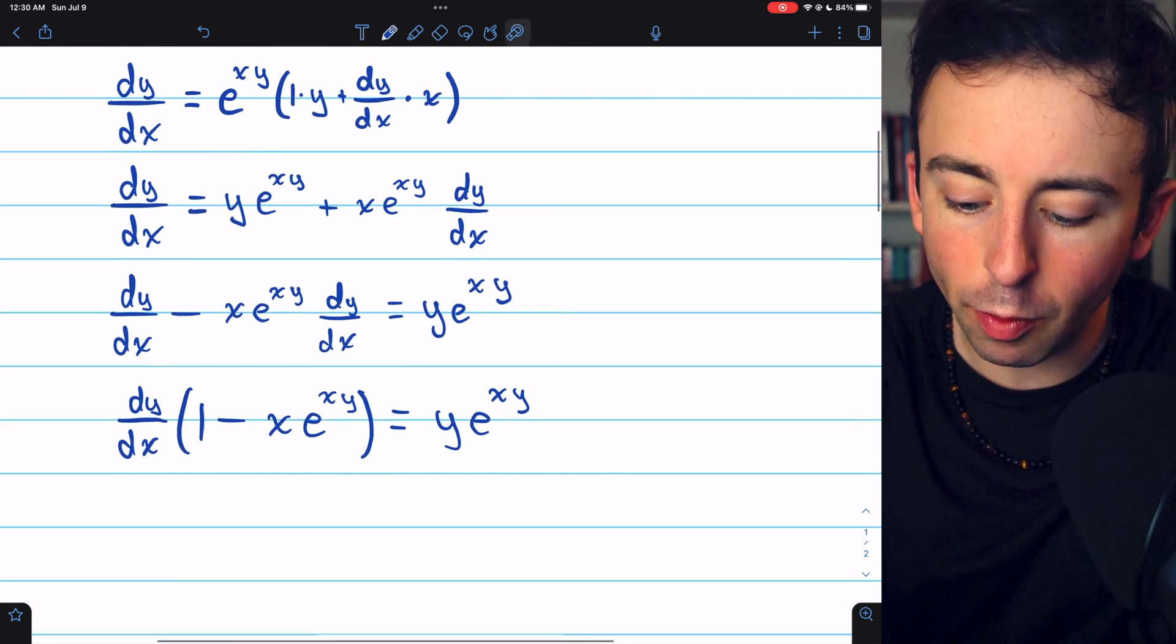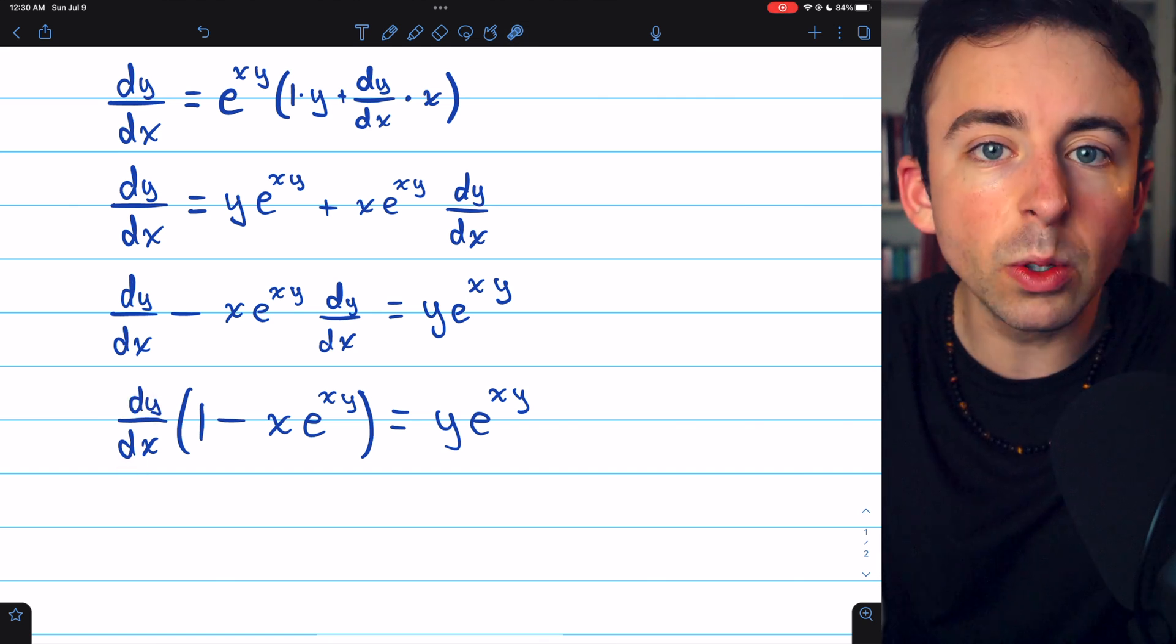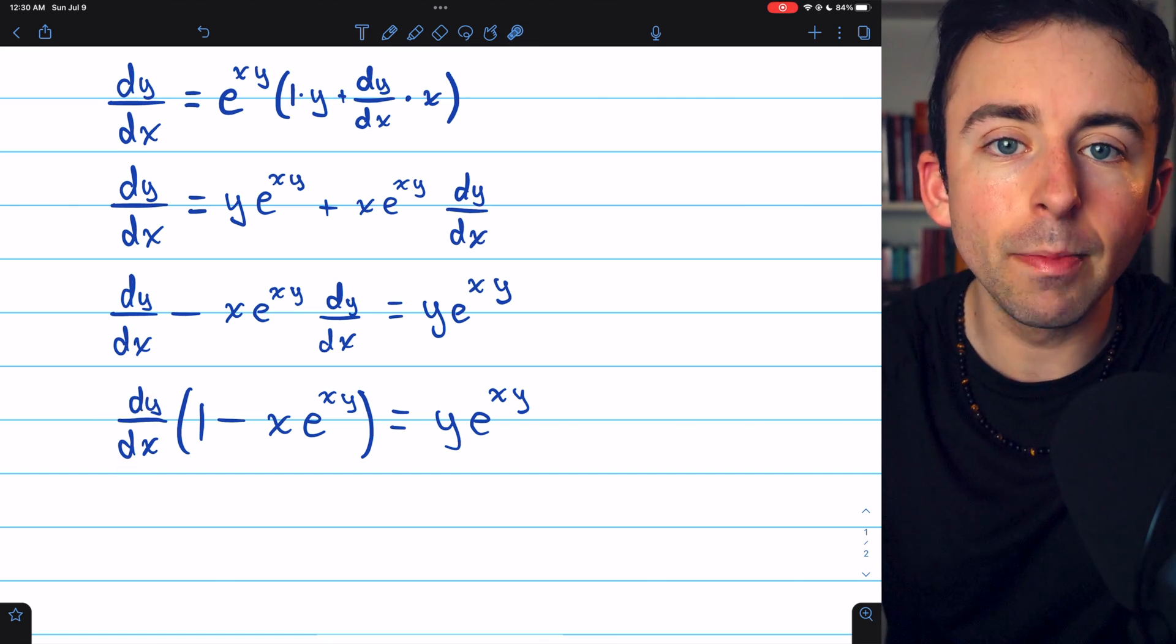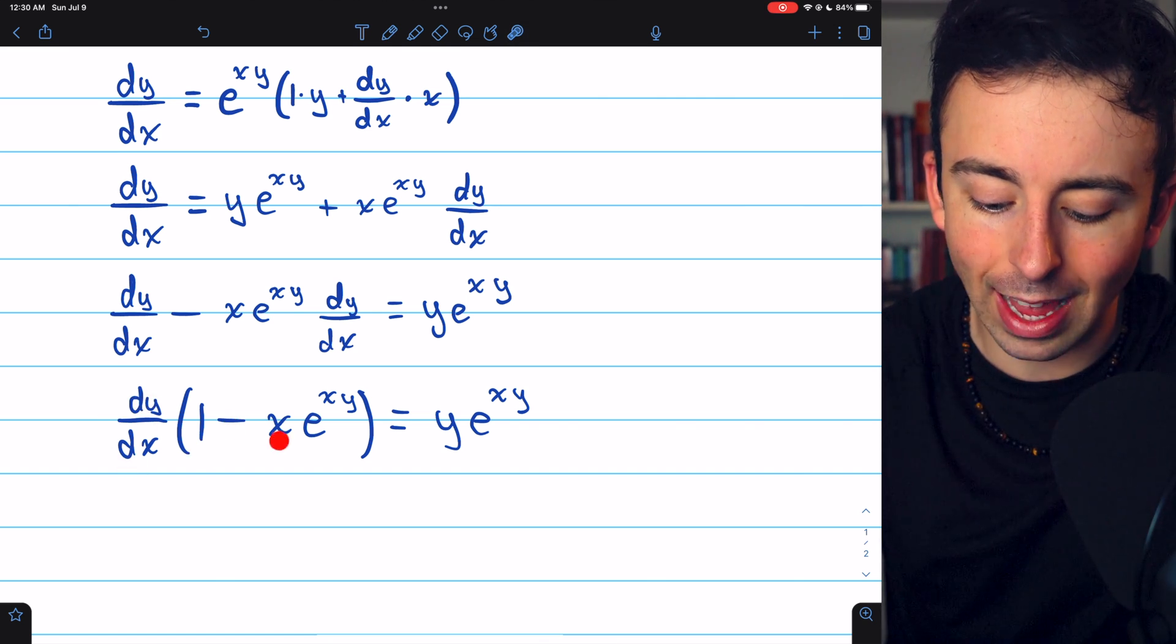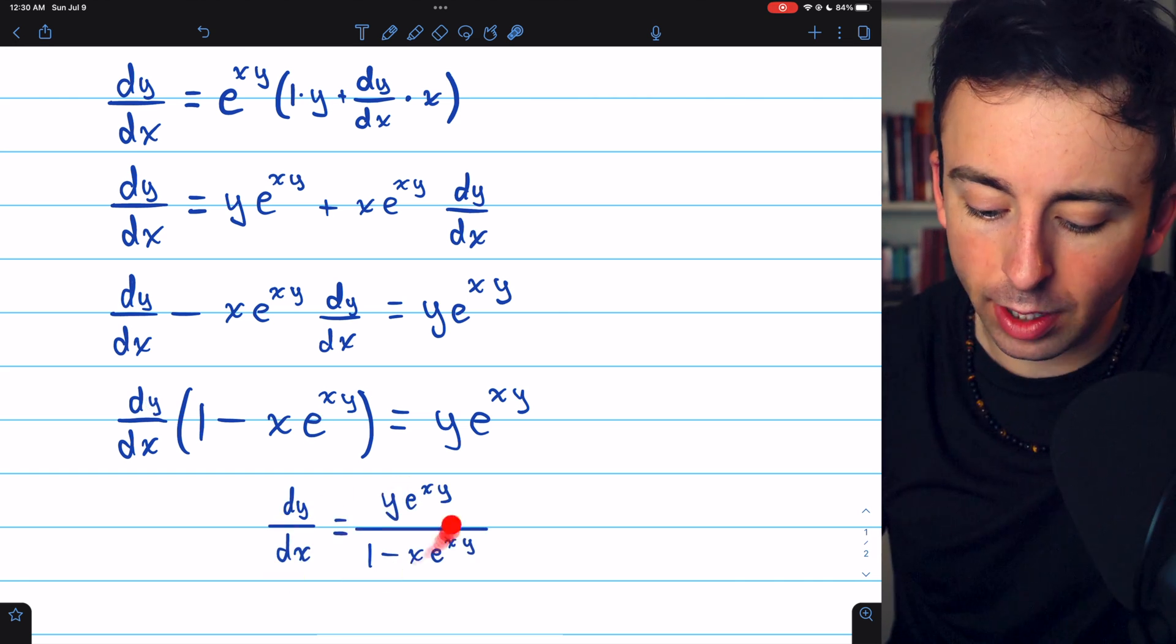And finally, to get our final answer solving for dy dx, we just divide both sides by 1 minus x e to the xy. And there we have it.